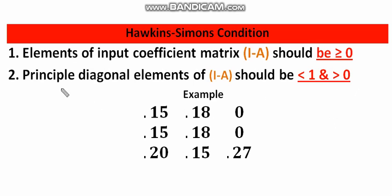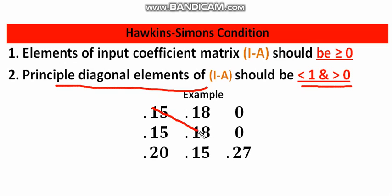The second condition is that the principal diagonal elements of the (I-A) matrix should be less than 1 and greater than 0. The principal diagonal elements are elements like 0.15, 0.18, and 0.17 — those lying on the diagonal of the matrix. So 0.15 is less than 1 and greater than 0; 0.18 is less than 1 and greater than 0; and 0.17 is also less than 1 and greater than 0.